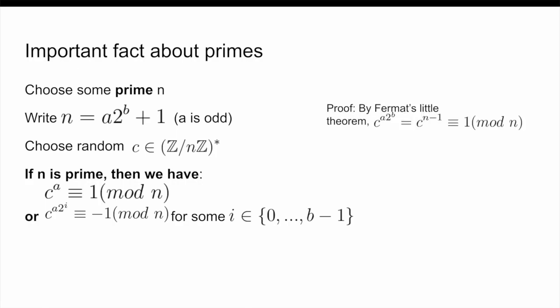Let's prove that this is the case. C to the power of A times 2^B equals C to the power of N minus 1, which, by Fermat's little theorem — because again we're assuming N is prime here — is congruent to 1 modulo N. Now, if C to the A is congruent to 1 modulo N, then we are done. So, without loss of generality, C to the A is not congruent to 1.